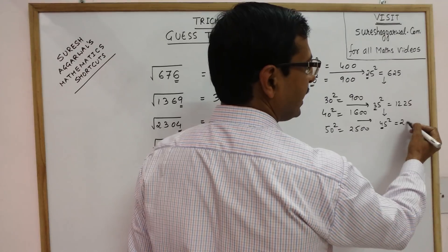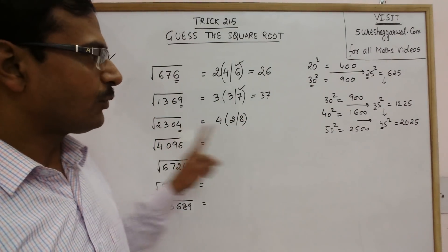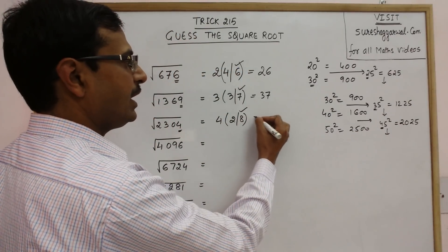4, 4 into 5 is 20, and 25. Our number 2304 is greater, so answer will be greater than 45. So this is 48.